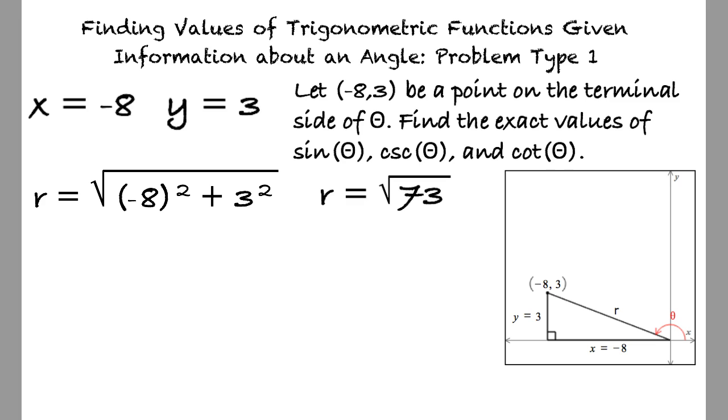Next, we solve for sine, which is equal to the opposite over the hypotenuse, 3 over √73, which simplifies to 3√73 over 73.